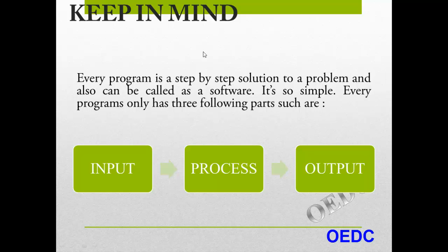Every program only has three following parts: Input, then Process, and Output. Input module, then Process module, then Output module. Then we can write a program very easily.